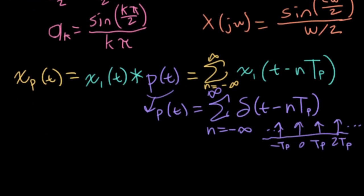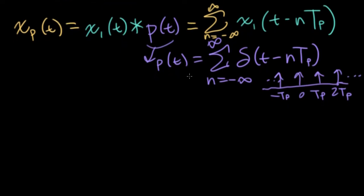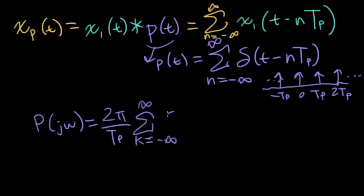All right, so we actually computed the Fourier transform of little pt in the previous lecture on sampling. Let's just pull out that result. We found out that an impulse train intriguingly transforms into another impulse train where all of the impulses have the same weight 2 pi over tp. And these impulses are spaced in the frequency domain by 2 pi over tp.